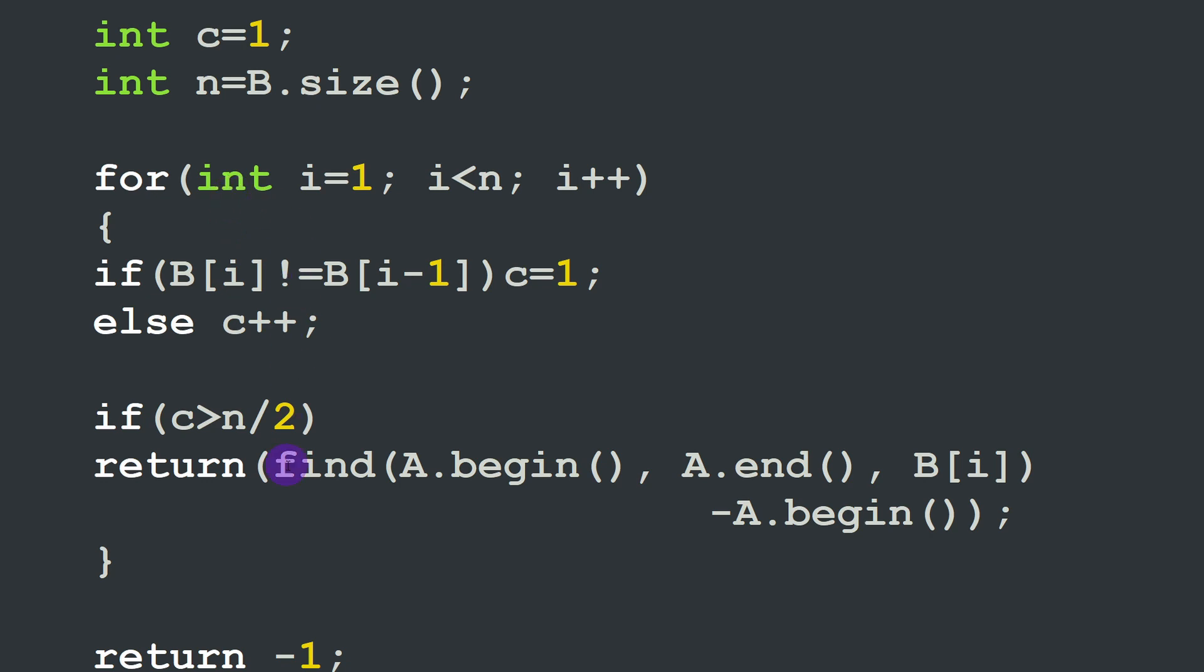If we have reached the end of the array, meaning we have scanned all the elements and we haven't returned any value, meaning we didn't find any dominator element, in this case at the end of the program it's good to put return minus one, which means that there is no dominator in the tested vector.